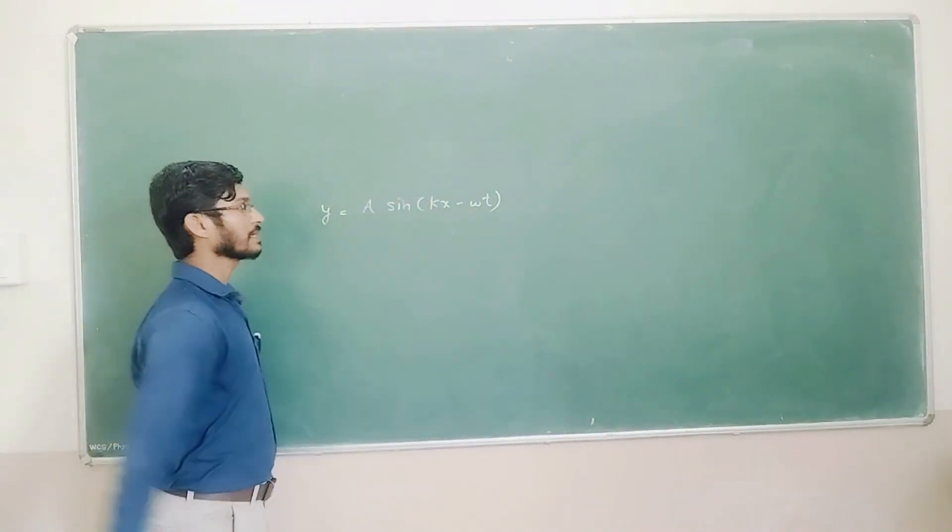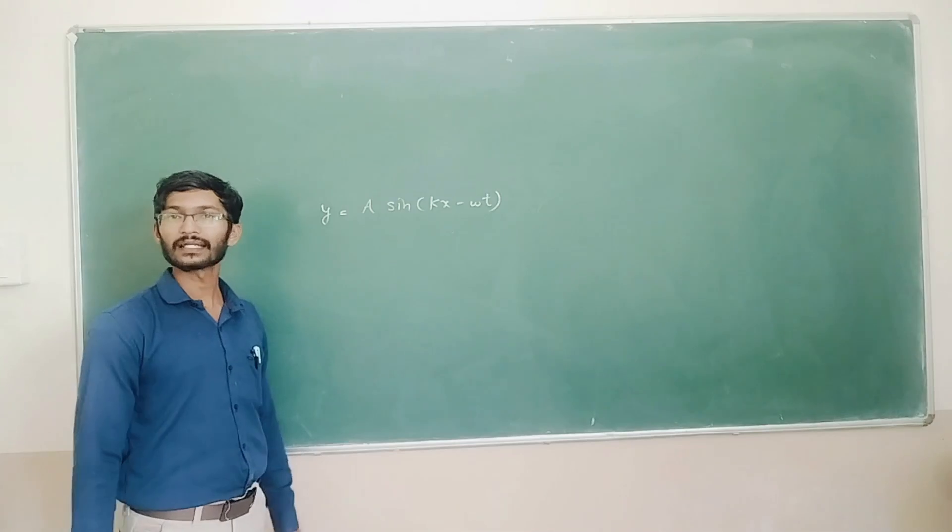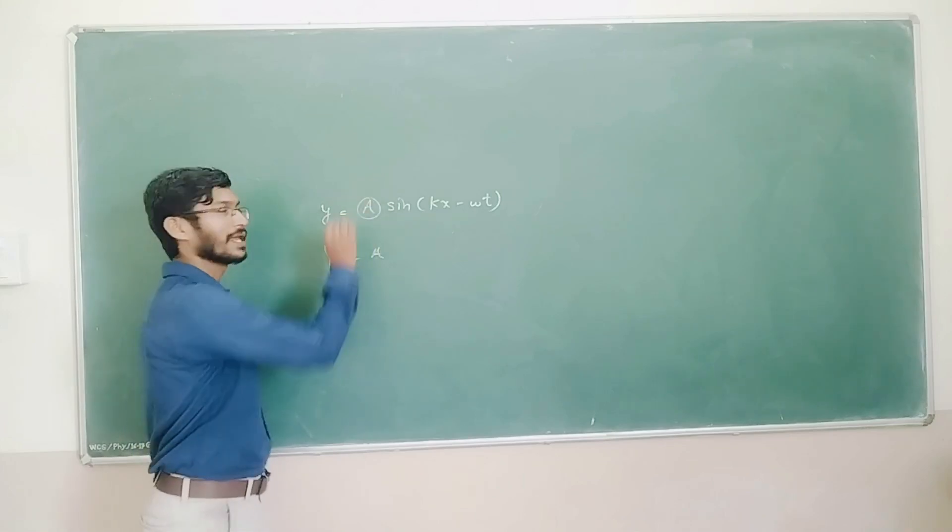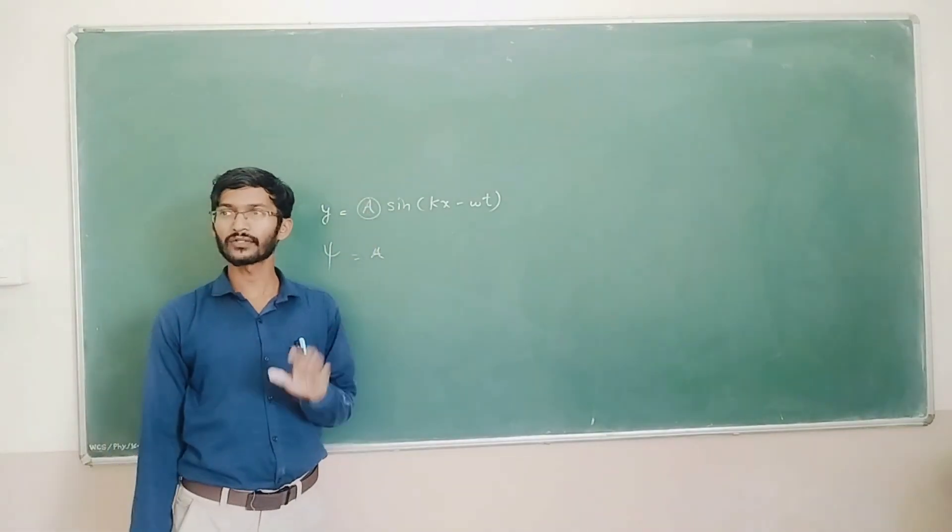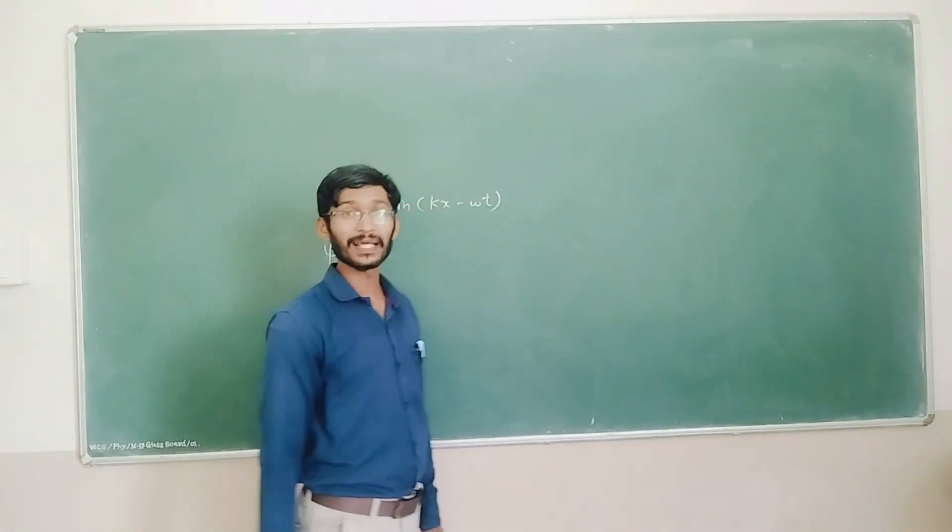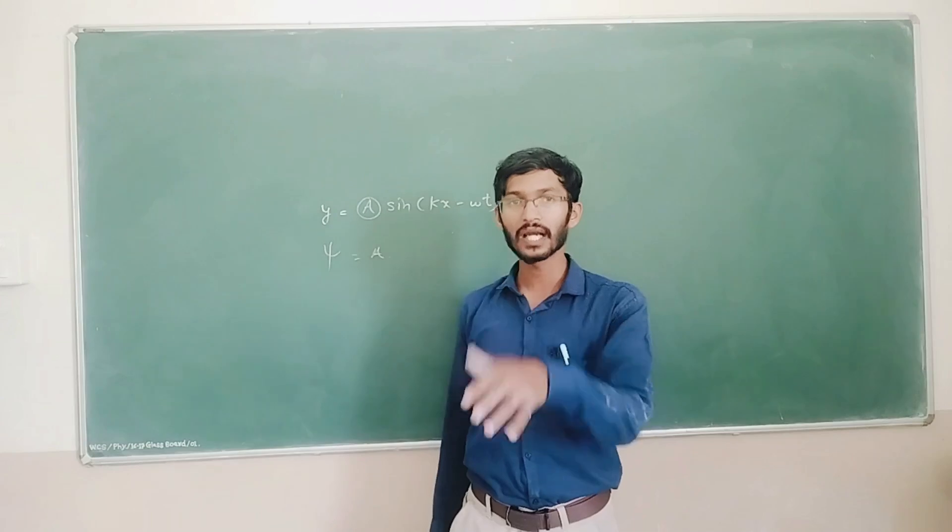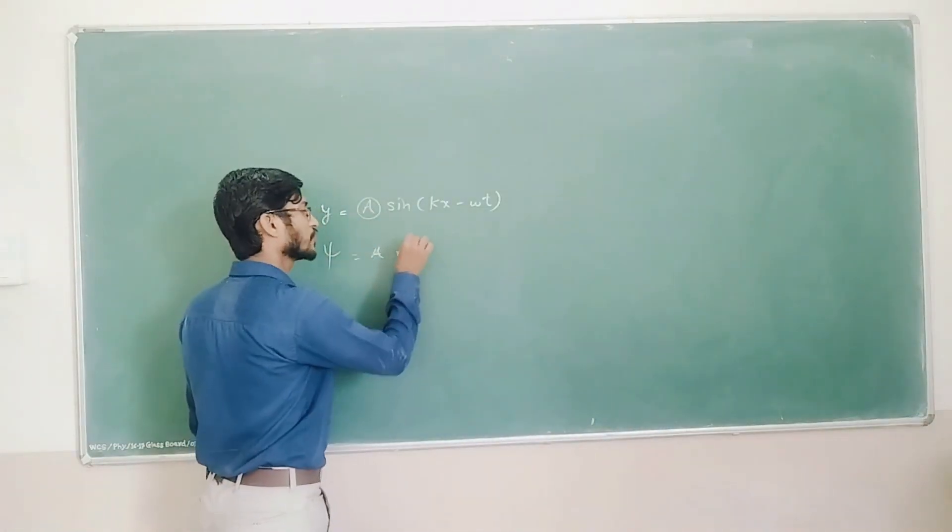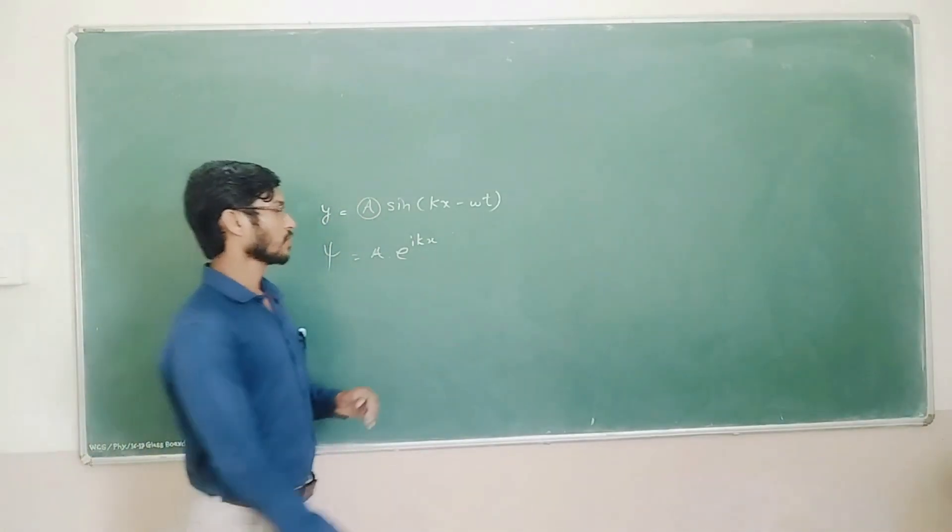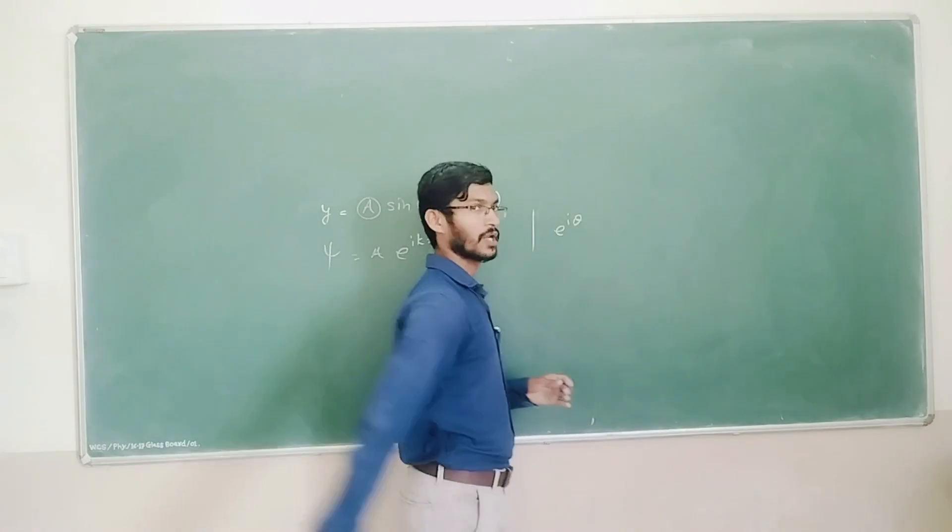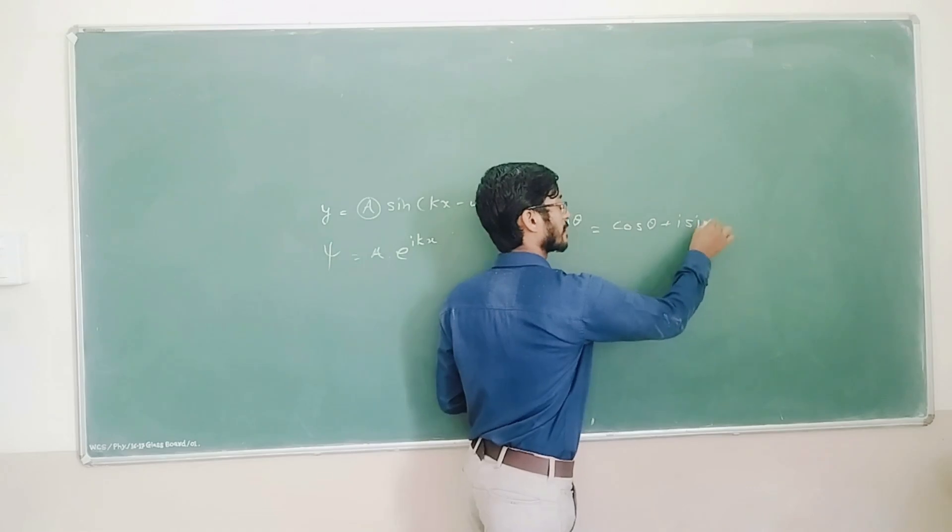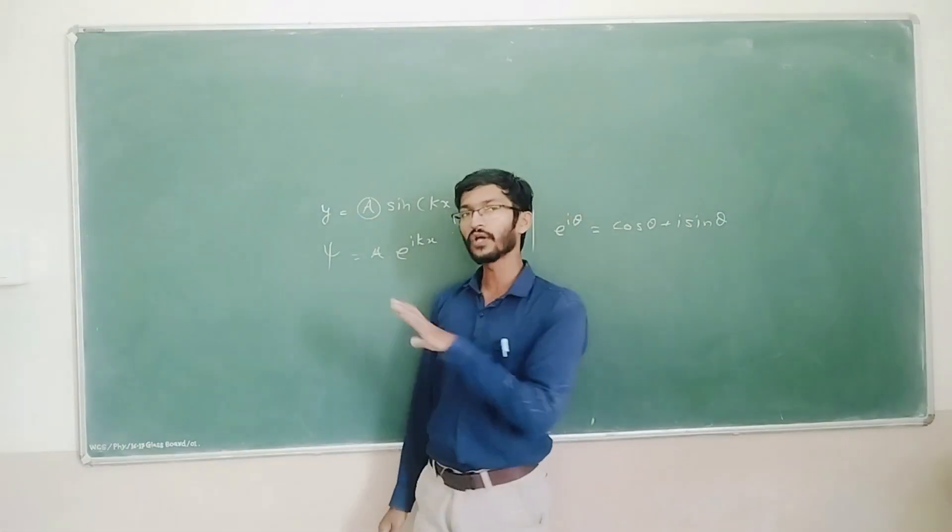So the same thing we can do in terms of quantum mechanics. Here we can write psi, here also we can have some normalization constant that we will discuss shortly. Then sin cos, or in quantum mechanics we will use a general term that is exponential of iax. e to the iθ, if you remember, this is nothing but cos θ plus i sin θ. So this is a combination of sin and cos.